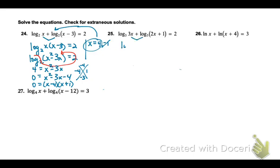25, we've got the same case here. We need to condense. So 3x times 2x plus 1. And then I'm going to do two steps here in one. I'm going to rewrite in exponential form, 3 squared, and I'm going to distribute. So 6x squared plus 3x.